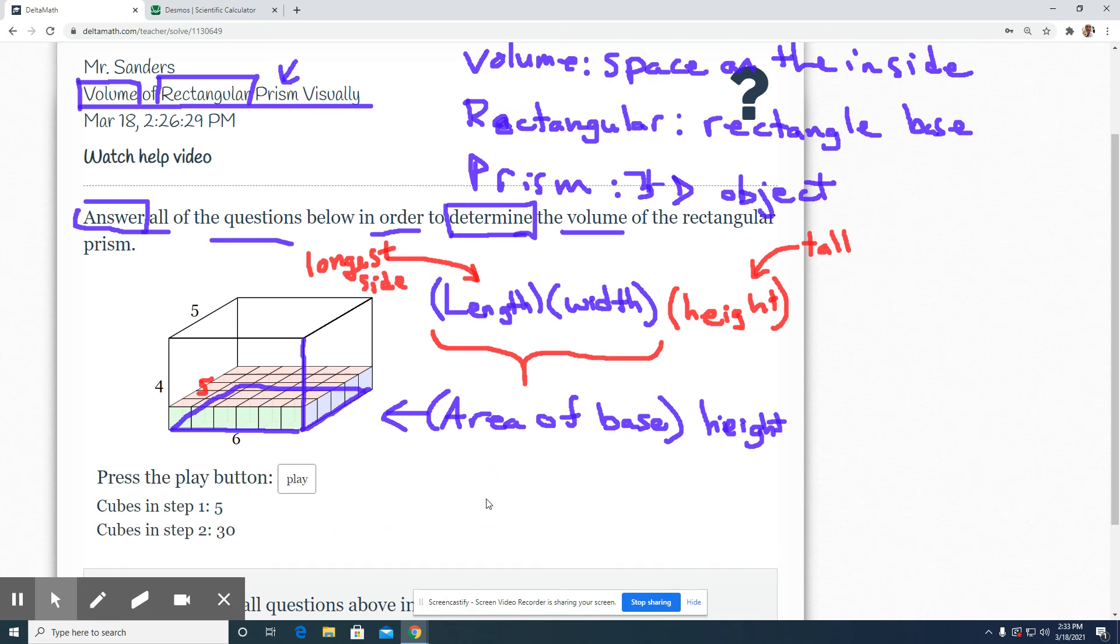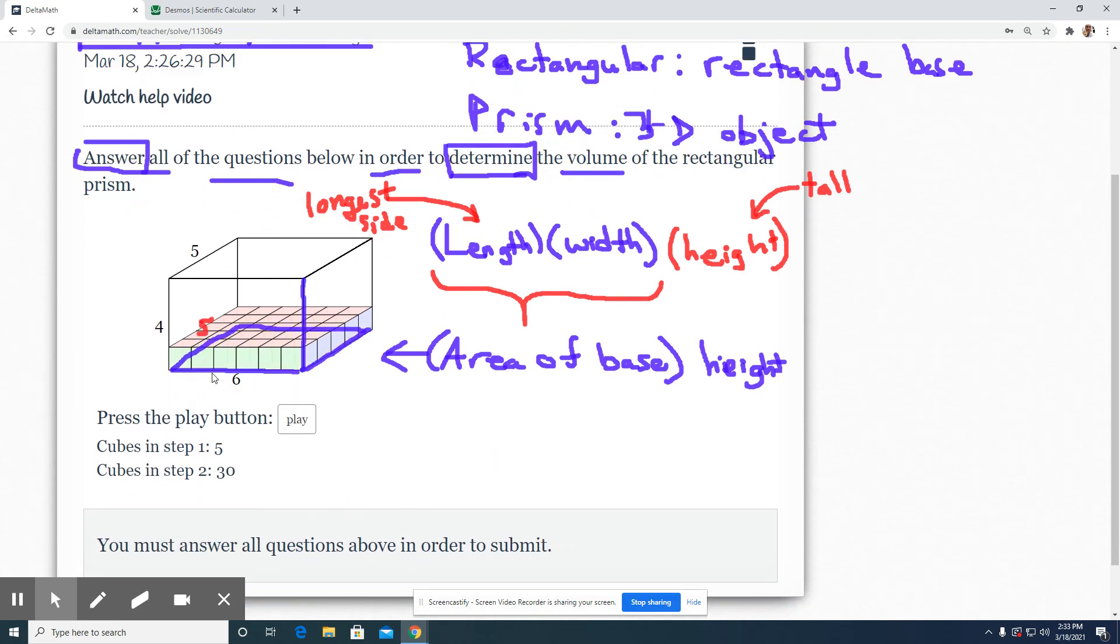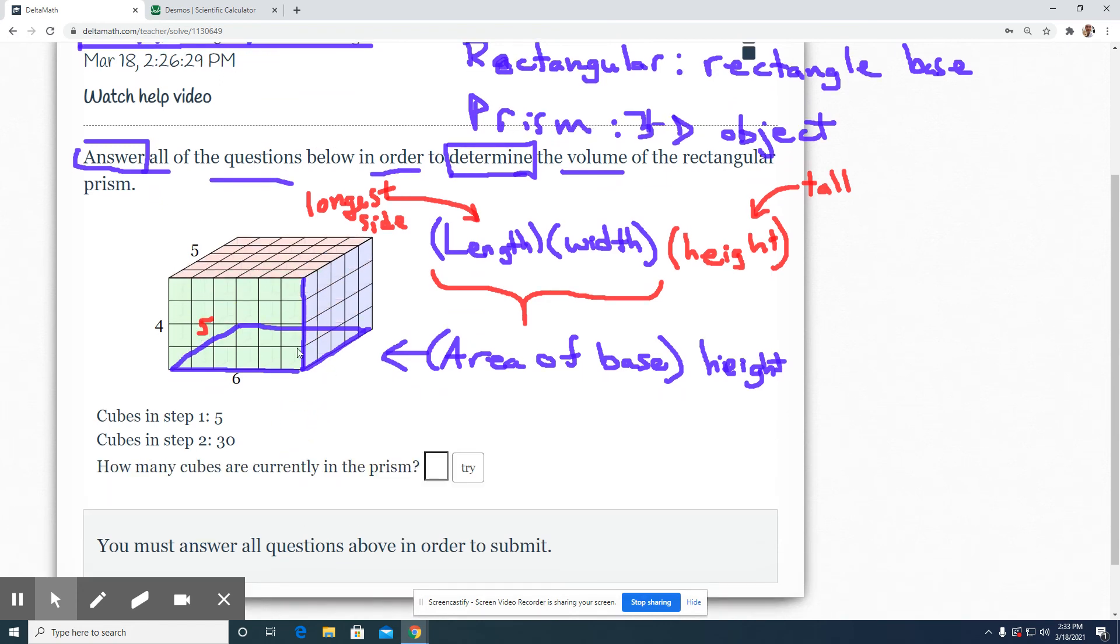And then now we're going to go up to the height, filling it all in. So that would be five times six is our 30, times what? How high did it go? How many of these sets of 30 did we have? We had four of them. So four times 30 is 120.